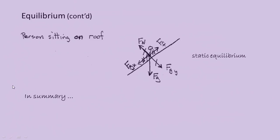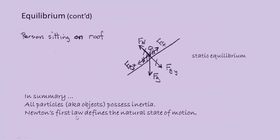Let's summarize what we've learned. All particles and objects possess inertia — that is a resistance to the change in their motion. Newton's first law defines the natural state of motion: an object at rest will stay at rest, and an object in motion will stay in constant velocity motion. We know this natural state of motion as mechanical equilibrium, and we can have static or dynamic mechanical equilibrium. This covers what we need to know about Newton's first law. I hope you found this podcast helpful.